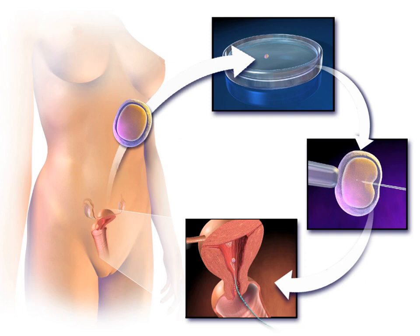Egg donors are resources for women with no eggs due to surgery, chemotherapy, or genetic causes, or with poor egg quality, previously unsuccessful IVF cycles, or advanced maternal age. In the egg donor process, eggs are retrieved from a donor's ovaries, fertilized in the laboratory with the sperm from the recipient's partner, and the resulting healthy embryos are returned to the recipient's uterus.